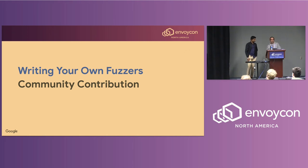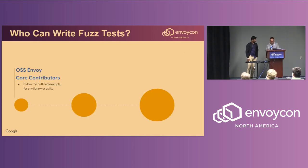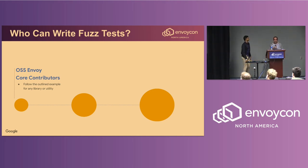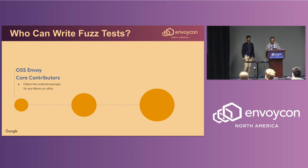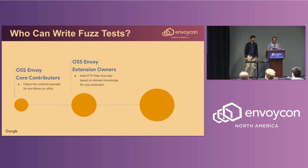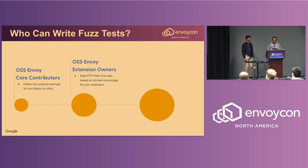How can the community contribute to the fuzzing efforts? Basically anyone can write fuzz tests and help make Envoy more robust and secure. The core components of Envoy are typically fuzzed by component-level or library-level fuzzers, mainly written by Envoy contributors with deep understanding of how these components work. Some internal extensions are fuzzed either by an extension-dedicated fuzzer or by the uberfilter fuzzer, which fuzzes the filter interface of any HTTP filter. These fuzzers are part of the Envoy repository and can be found on GitHub.